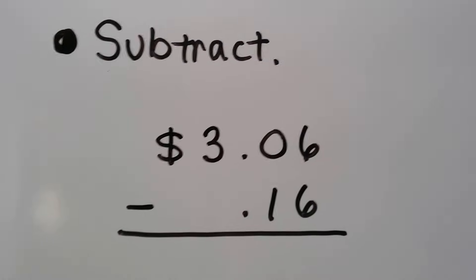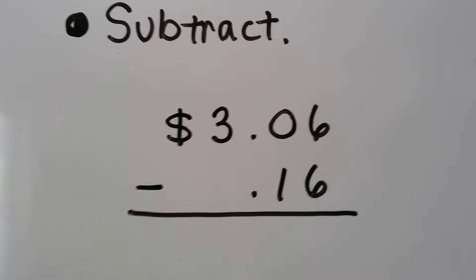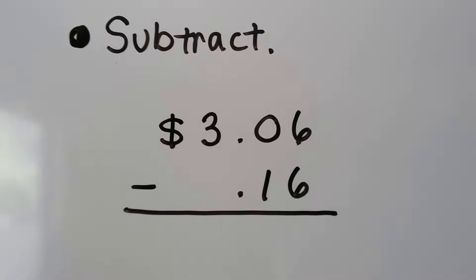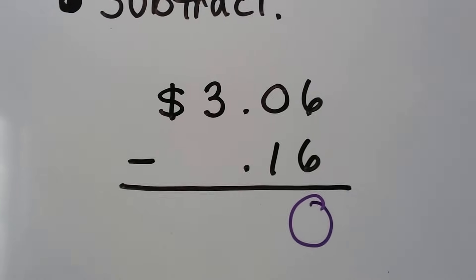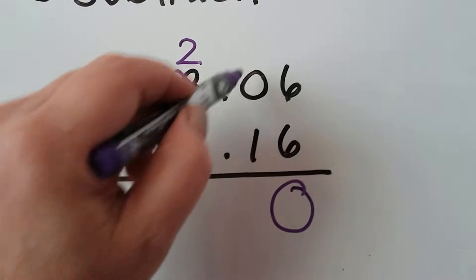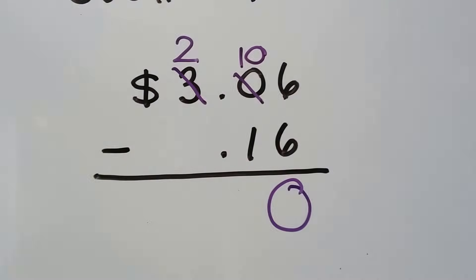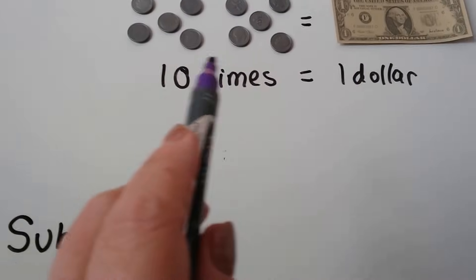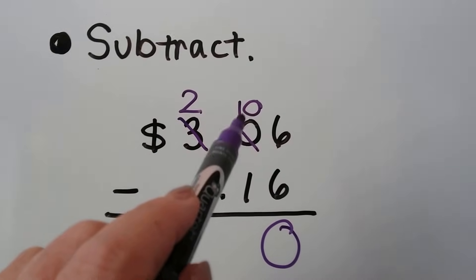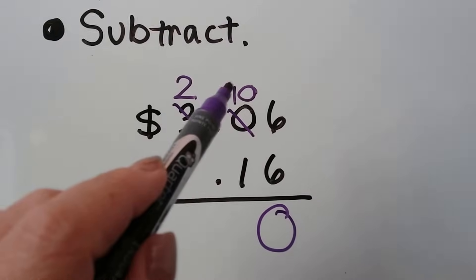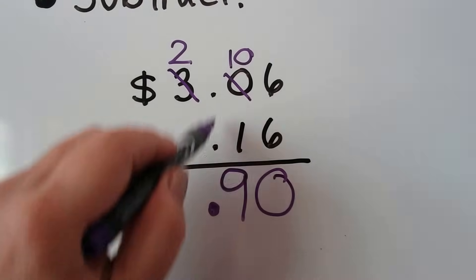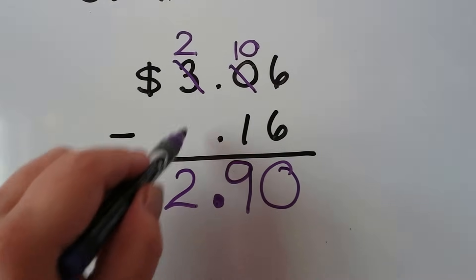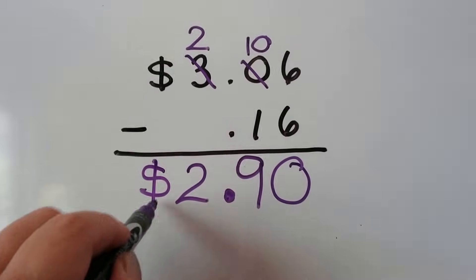Let's try some subtraction. We have 3 dollars and 6 cents and we need to take away 16 cents. We start with the ones place and remember we might need to regroup. 6 take away 6 gives us 0. 0 take away 1 — we can't do that. We need to borrow from the dollars. It's going to become 2 dollars and this is going to become 10 tens, because 10 tens equal a dollar. Now we have 10 tens and take away one 10 — that gives us 9 tens. We remember our decimal point in a nice straight column and bring down the 2 and remember our dollar sign. We have 2 dollars and 90 cents.